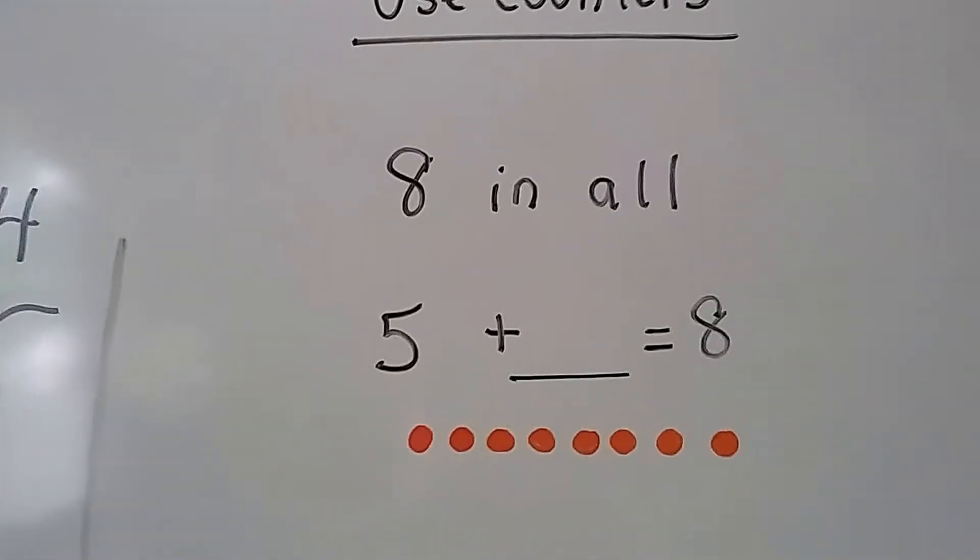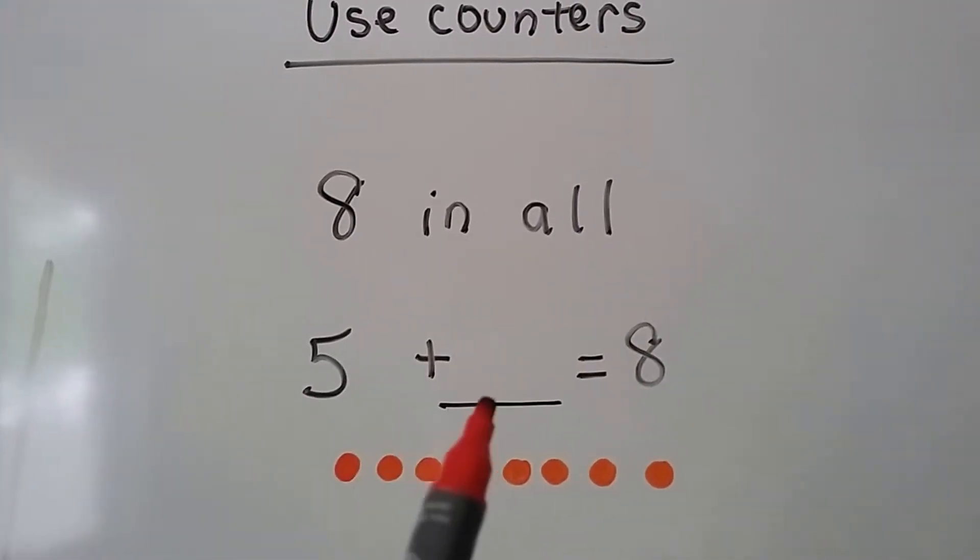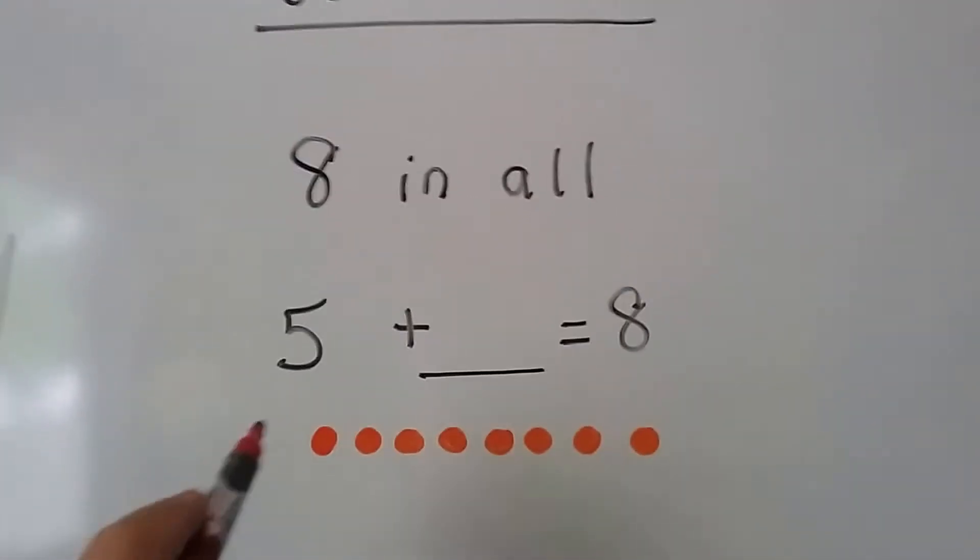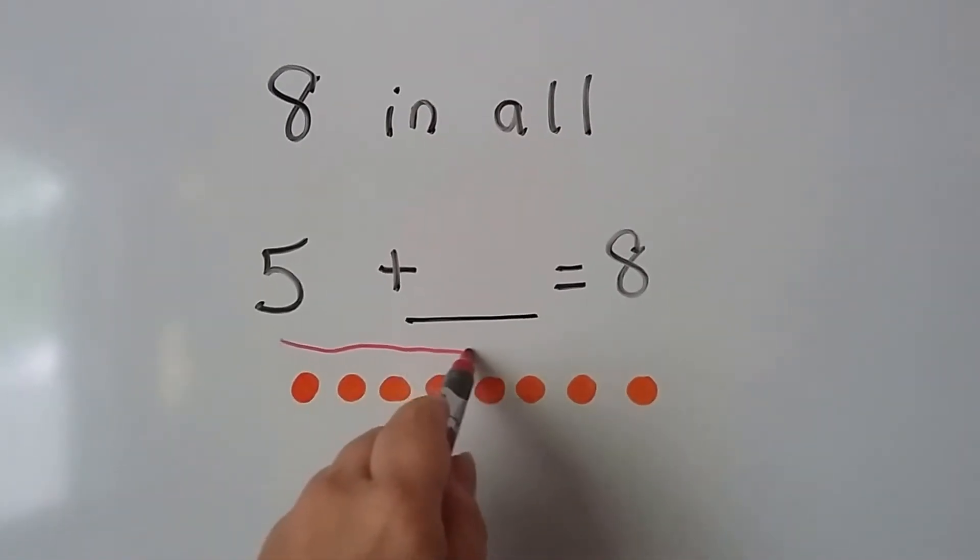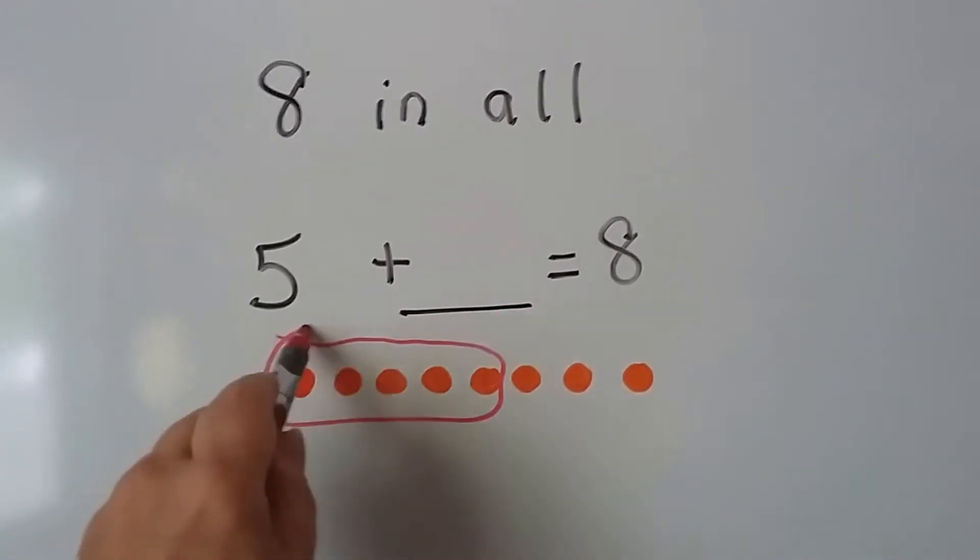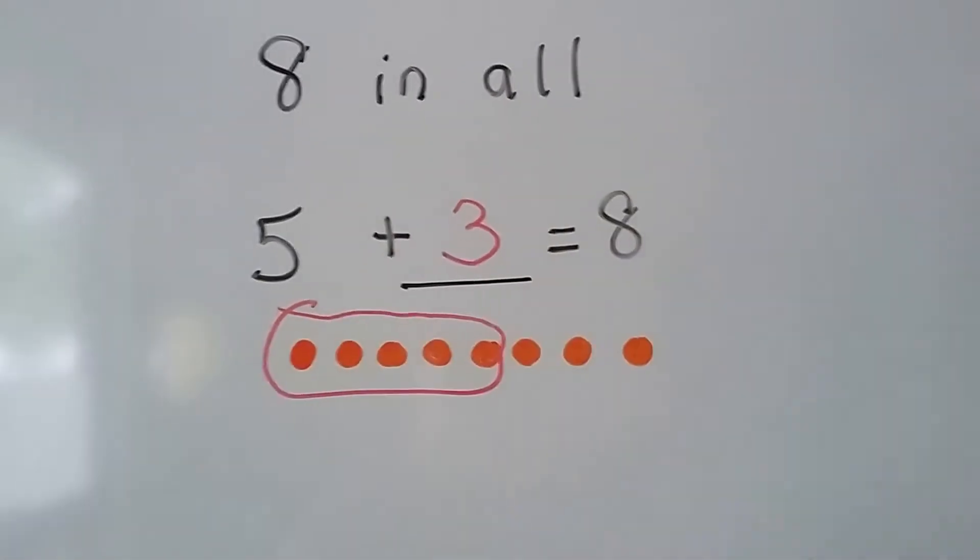So let's try this. We'll start by using counters. There's supposed to be 8 in all. 5 plus something equals 8. So let's circle 5 of these: 1, 2, 3, 4, 5. And we see how many are left over. That's a 3. 5 plus 3 equals 8.